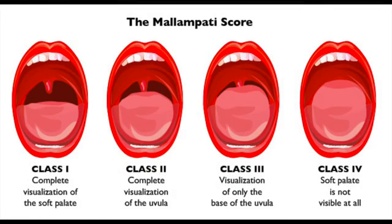The last aspect of anatomy we will cover is the Mallampati score. Just know there are four classes. Class 1 is the best and allows complete visualization of the soft palate, while class 4 means absolutely no visualization of the soft palate and would likely be a difficult airway. Type 1 is best and type 4 is worst.